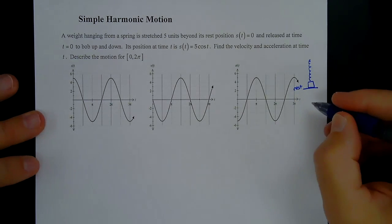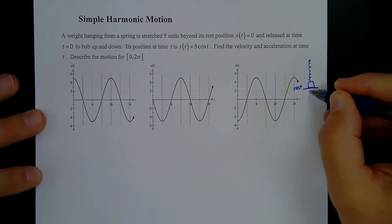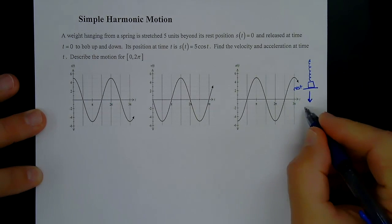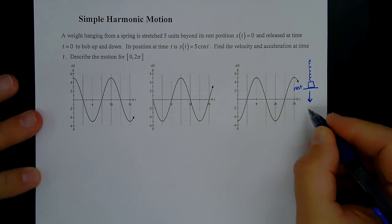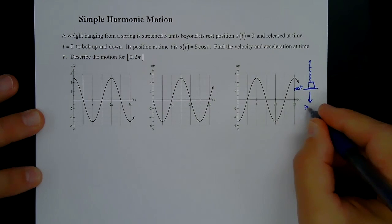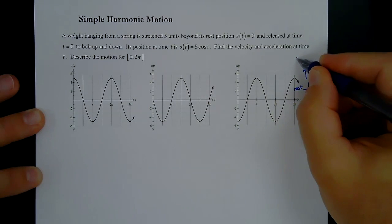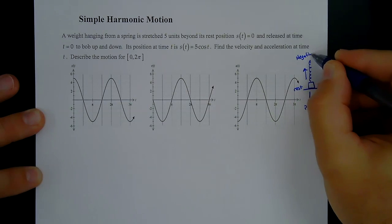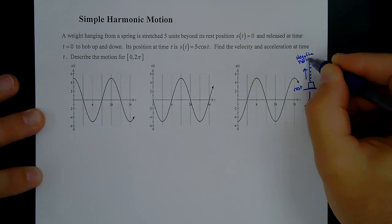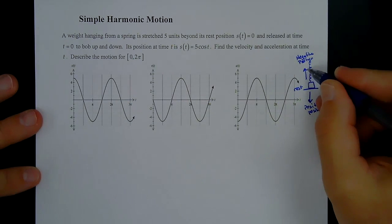This is going to be different than what you're used to. We're going to pull it down, and that's going to be positive position. So going down is positive — usually we think of going up as positive, but here going down is positive, which means going up is negative position. Right here at rest, if it's not moving and just hanging, that's the rest position.